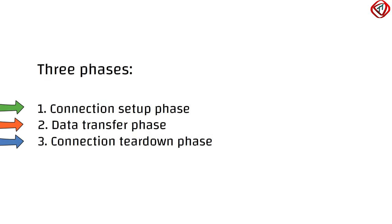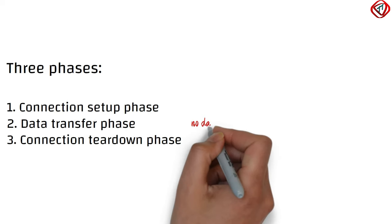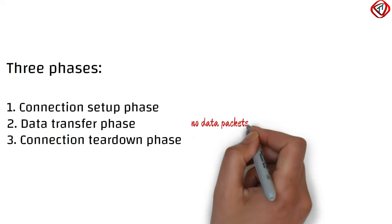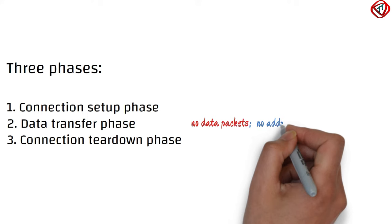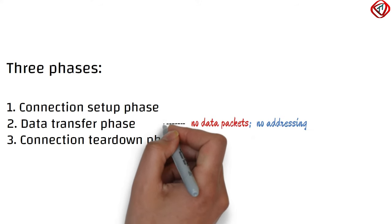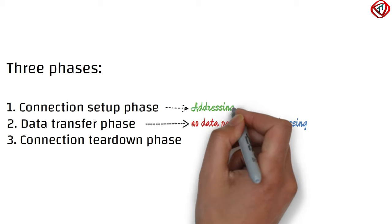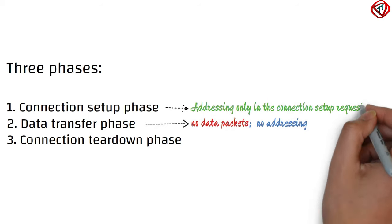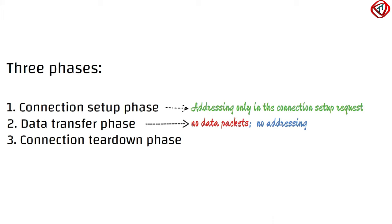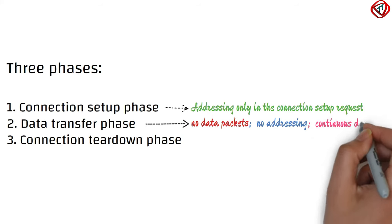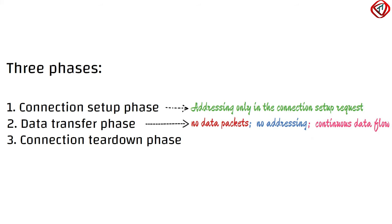Please note that the data in circuit switched networks is not in the form of packets and no addressing is involved during the data transfer phase. Addressing is used only in the connection setup request to reserve channels for one-to-one communication. After that, the data from sender to receiver is a continuous flow. Circuit switching takes place at the physical layer.